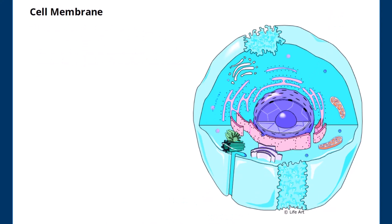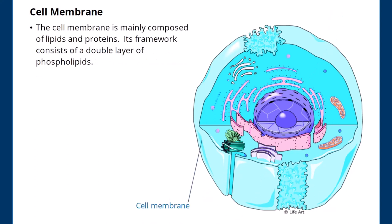Cell membrane. The cell membrane is mainly composed of lipids and proteins. Its framework consists of a double-layer of phospholipids.